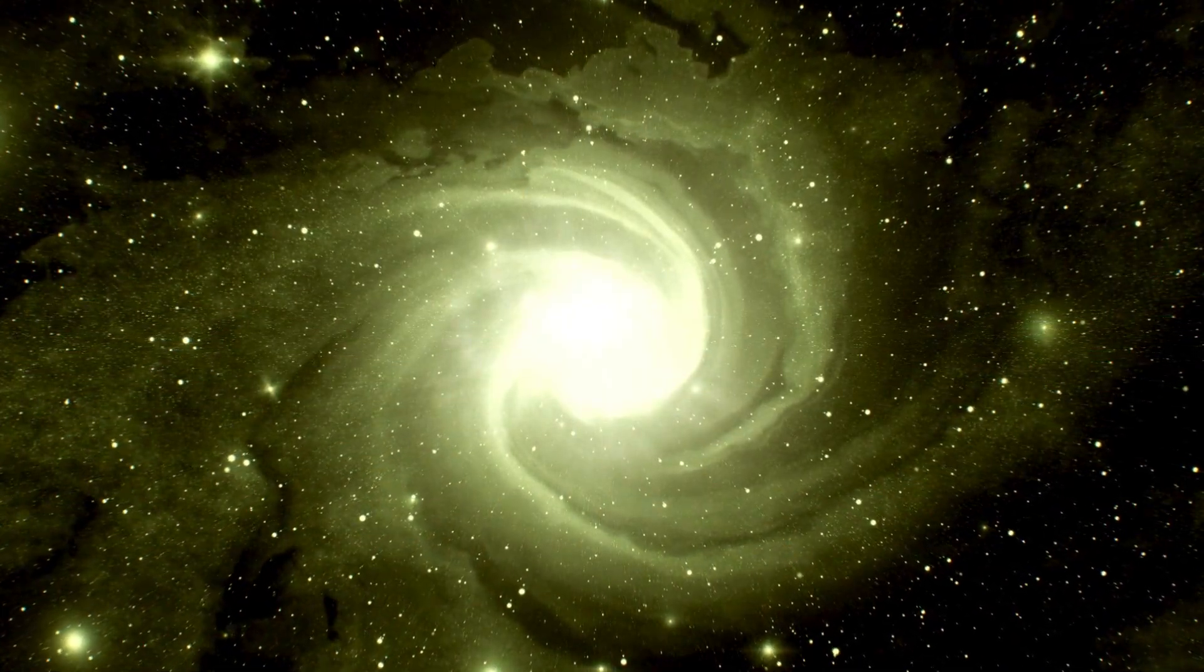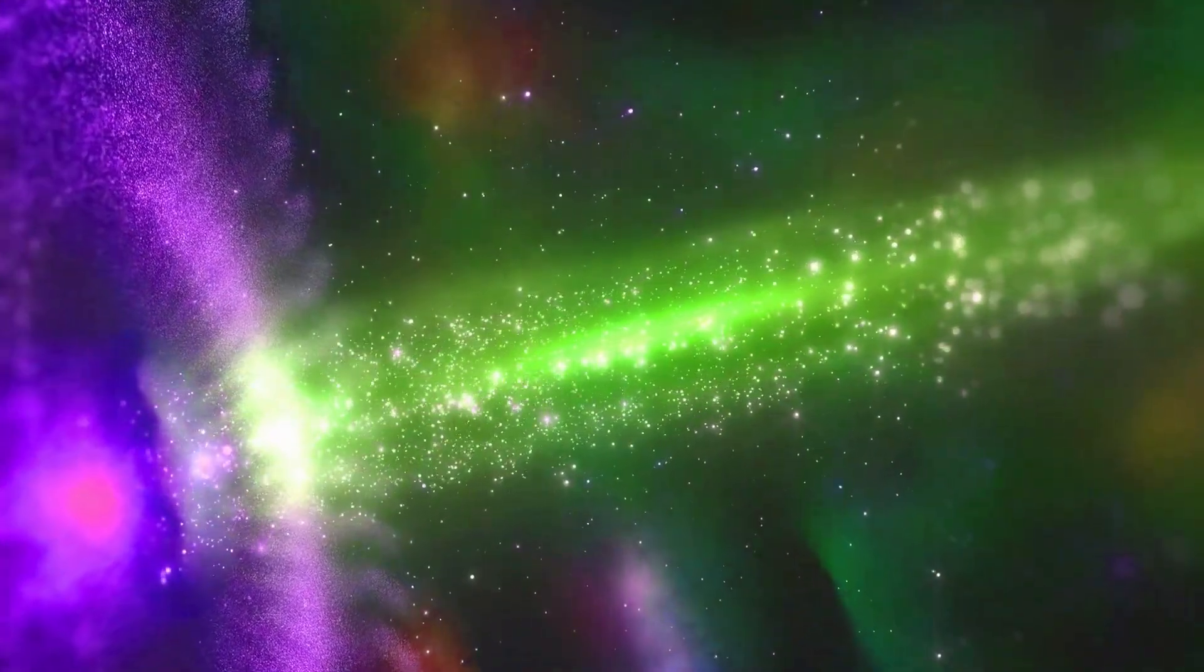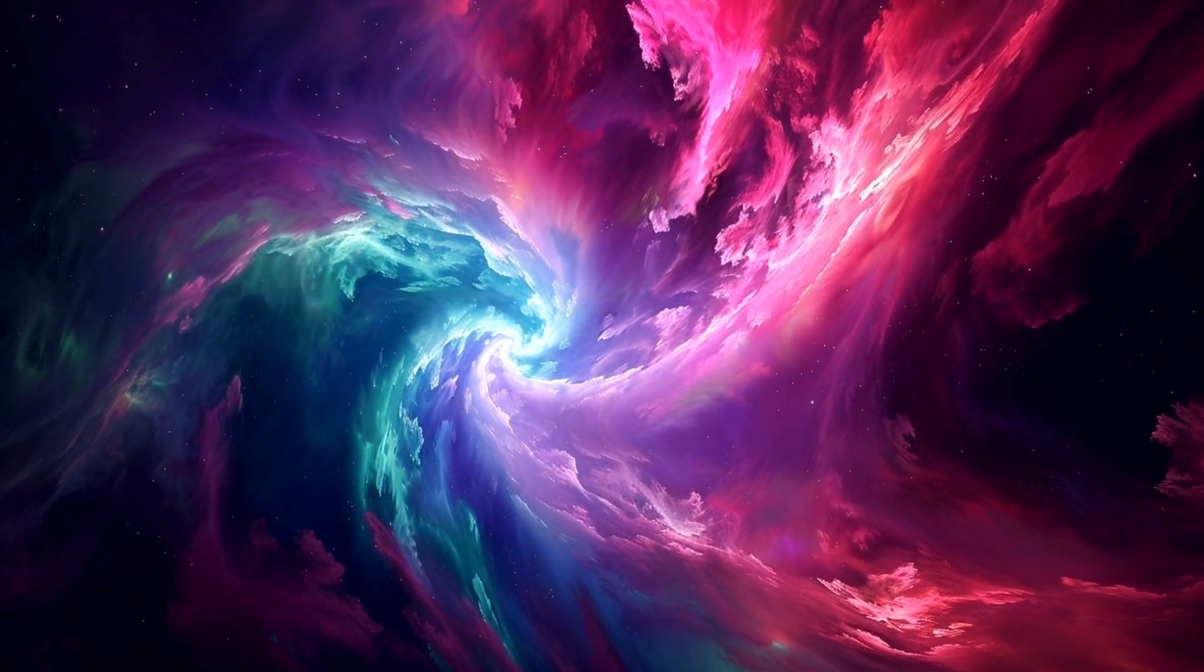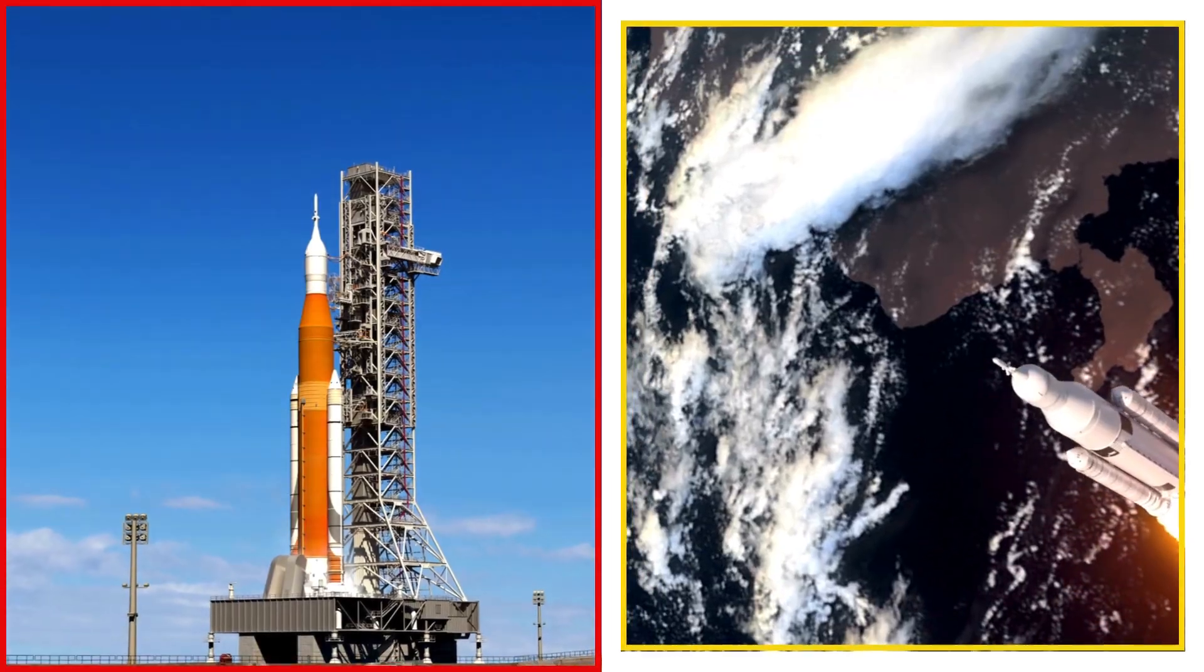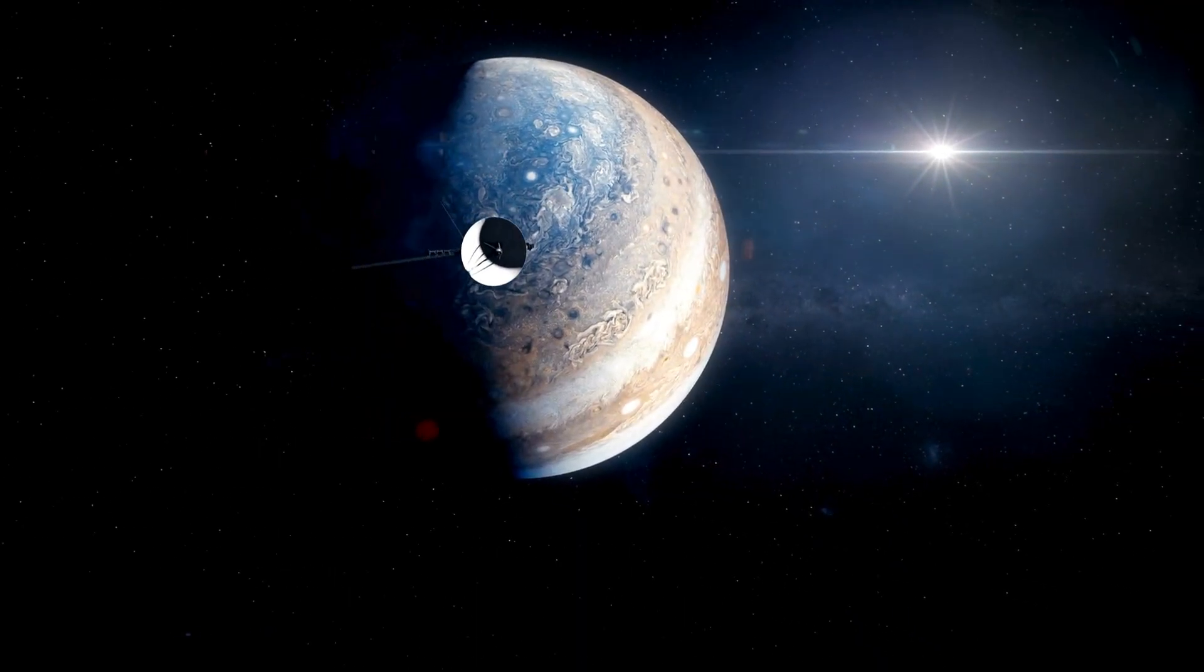For Earth, this matters. Cosmic rays influence atmospheric chemistry, cloud formation, and even climate over cosmic time scales. A more permeable heliopause could mean a solar system more exposed to the galaxy's whims, with consequences we are only beginning to grasp.